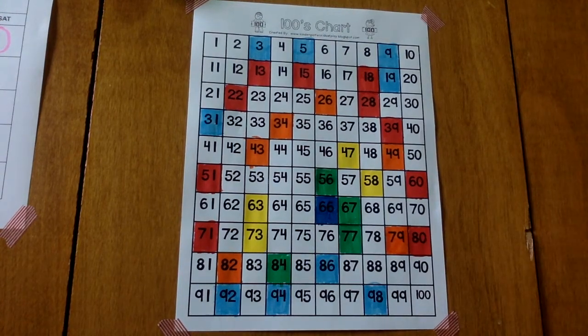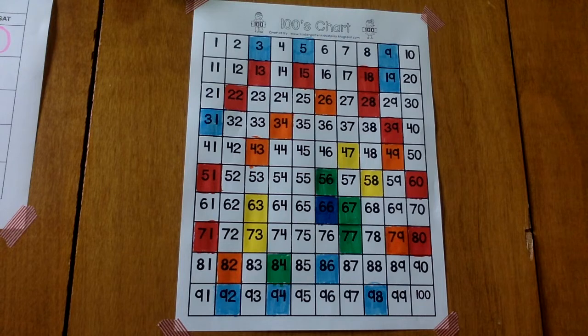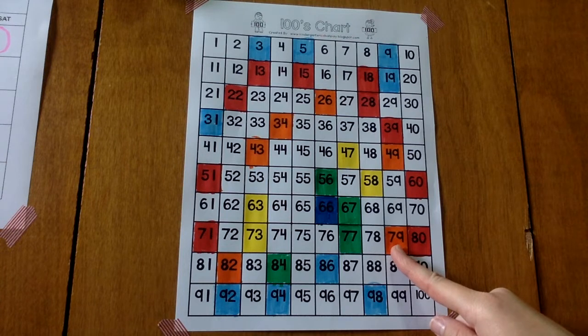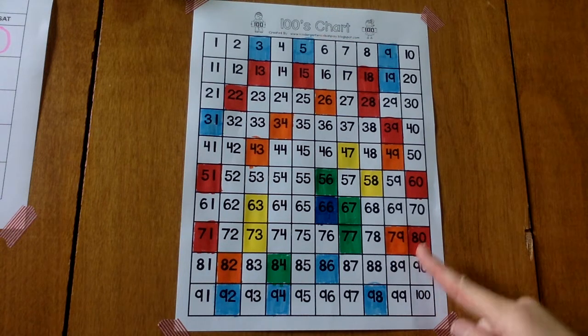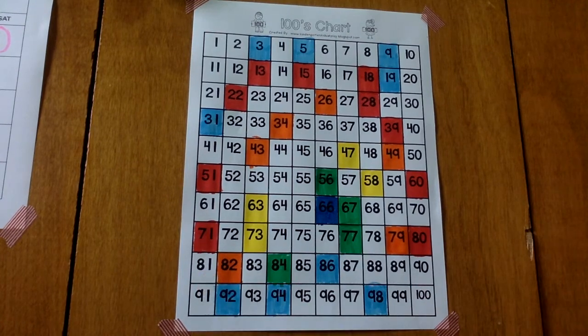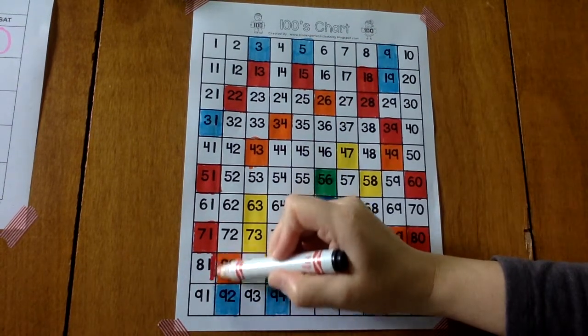And our last number for the day is 81. Ooh, we were really close. That was 79 we colored. Then 80. Starting a new row, 81. And red is for 81.